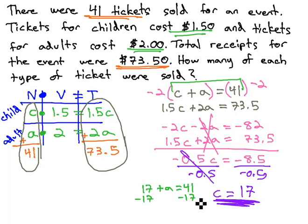Subtracting 17 from both sides, we find out A, the number of adults, is 41 minus 17, which is 24.